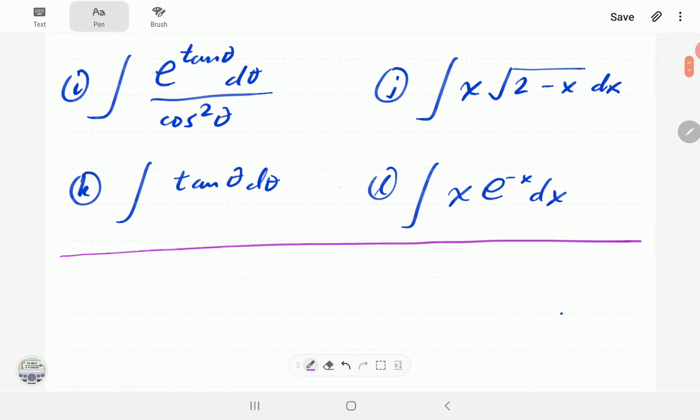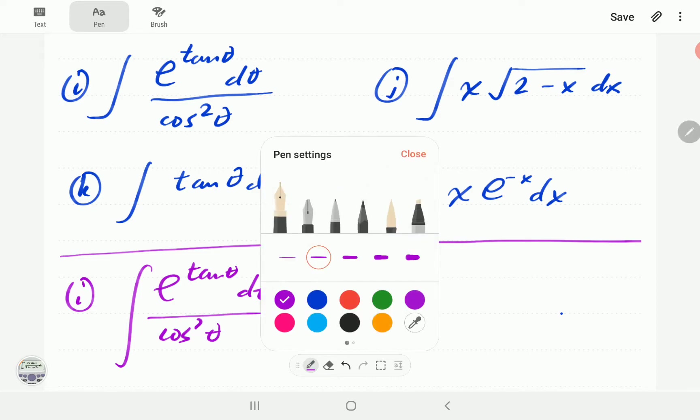In example i, we have e to the power of tan θ dθ all divided by cos²θ. We have two functions, tangent and cosine squared. The question is, do you have one function which differentiates to give something like the other function?